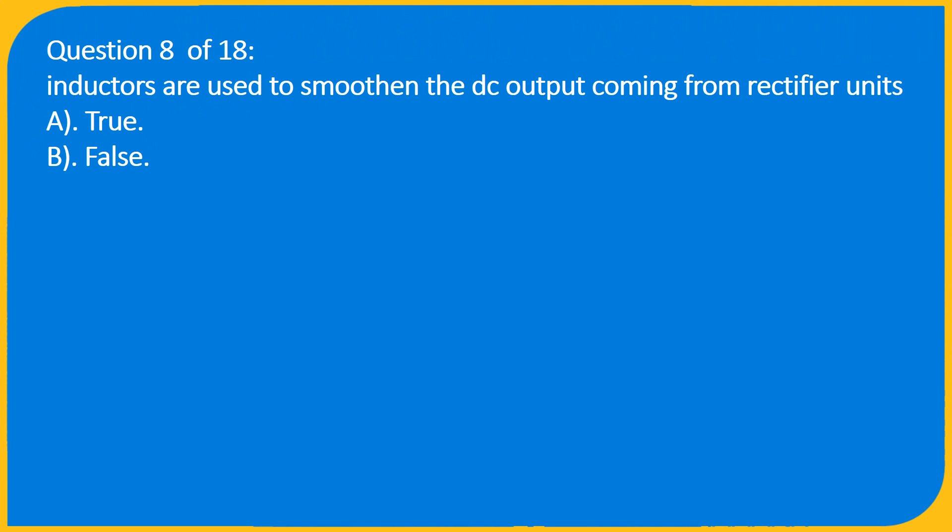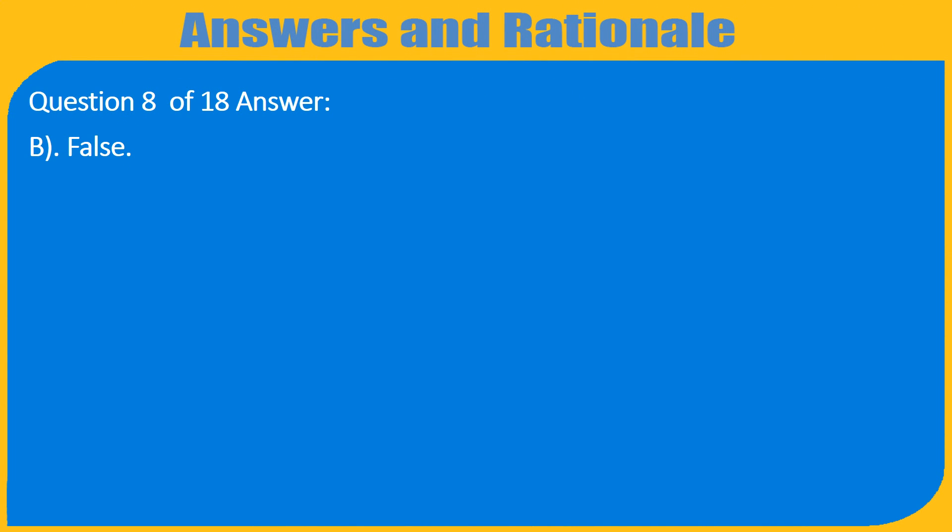Question 8 of 18: Inductors are used to smoothen the DC output coming from rectifier units, A. True, B. False. Question 8 of 18 Answer: B. False.